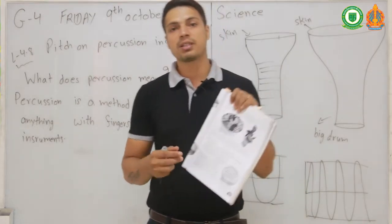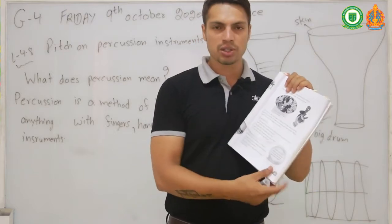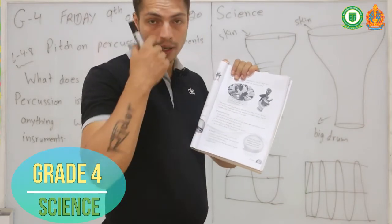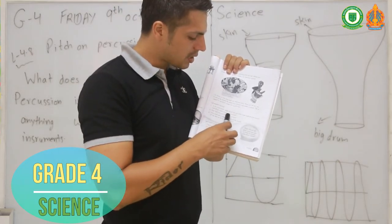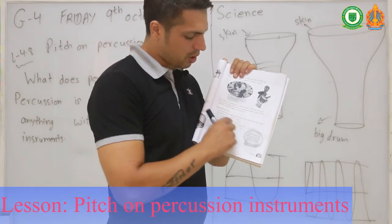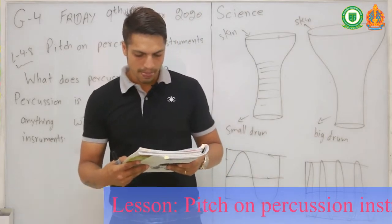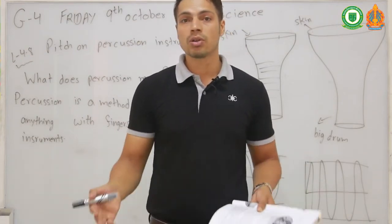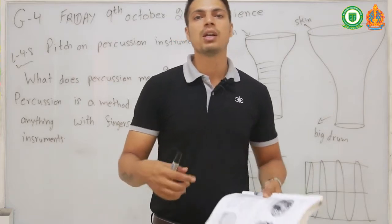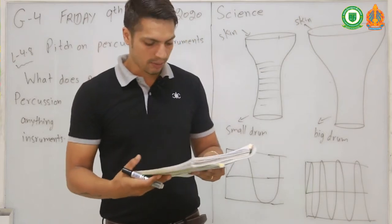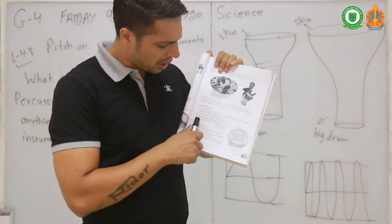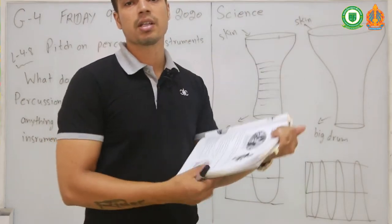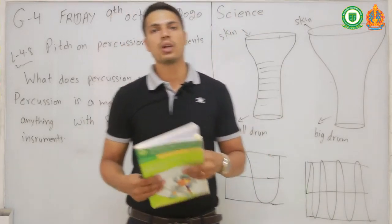Now for your Task 1, on page number 67. You need to answer the questions: In the steel band, which drums make high-pitched sound and which make low-pitched sound? How does the steel band play a tune? When you hit the top of a steel band drum, it makes vibrations in the air, and that's how it makes sound. How could you change the pitch of the sound on the frame drum in the picture?